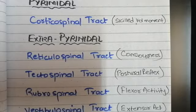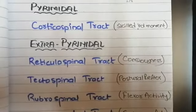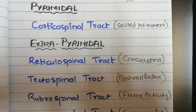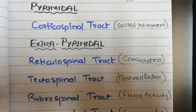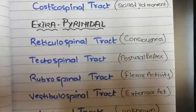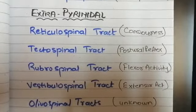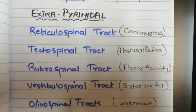The descending tracts of the spinal cord are divided into two parts. There are the pyramidal tracts, which include the level of the pyramids at the level of the medulla — when these tracts pass through the medulla they form the pyramids and then go towards the spinal cord. And the extrapyramidal tracts, which include the reticulospinal, tectospinal, rubrospinal, vestibulospinal, and the olivospinal tracts.